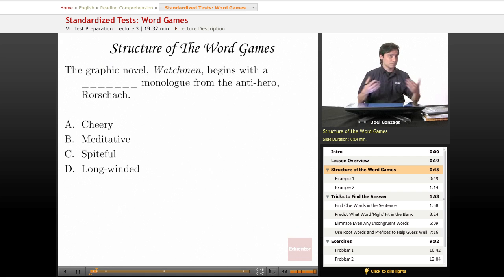Here is a simple structure of a word game. The graphic novel Watchmen begins with a blank monologue from the antihero Rorschach. Then I have four options of what I think should go into that blank. Now, about the only thing I know from this sentence right now is that this word right here needs to be an adjective, and all of these are adjectives. So we will use tricks in a minute to answer this one.